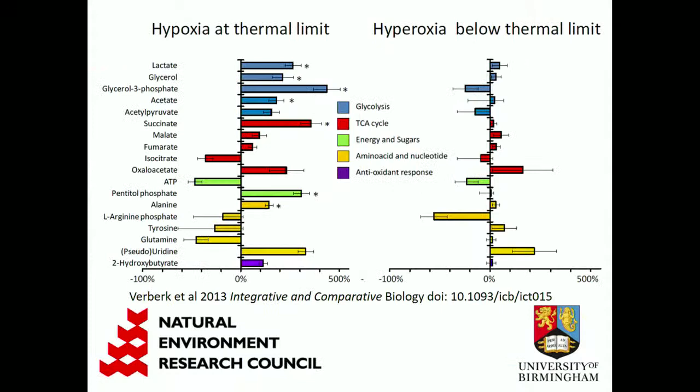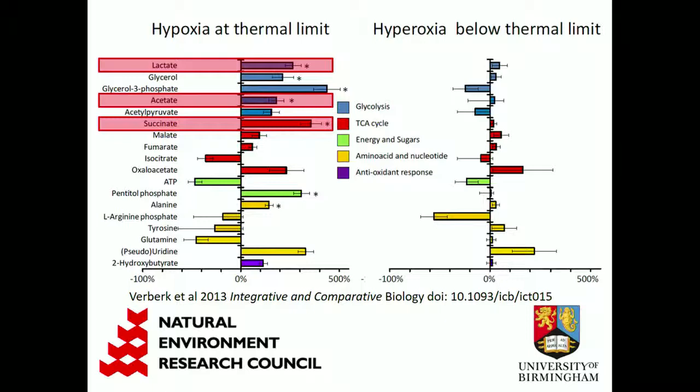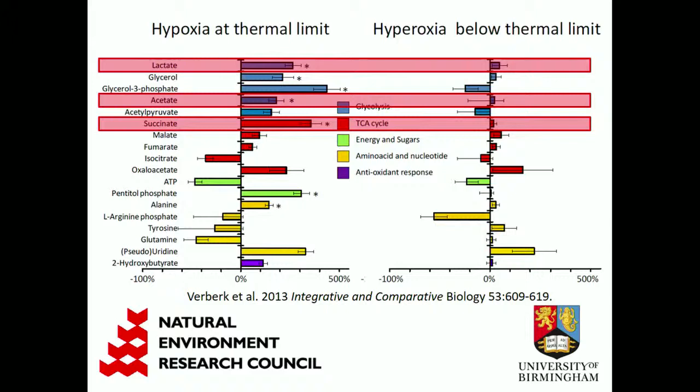I was also fortunate enough to work with the University of Birmingham and we were able to look at metabolites of these nitrogen-frozen animals. In hypoxia at the thermal limit, they do accumulate anaerobic metabolites, suggesting they have to switch to anaerobic metabolism — indicating that oxygen is limiting. If you keep them at the same temperature but supply a lot more oxygen, this pattern disappears, again suggesting it really is oxygen that's driving that.